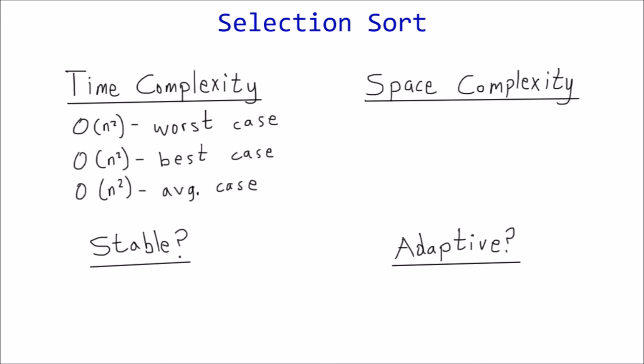Next up, space complexity also using big O notation. Because this is an in-place sorting algorithm, it doesn't require any extra space, so it's order one. Or said differently, it requires a constant amount of additional space.